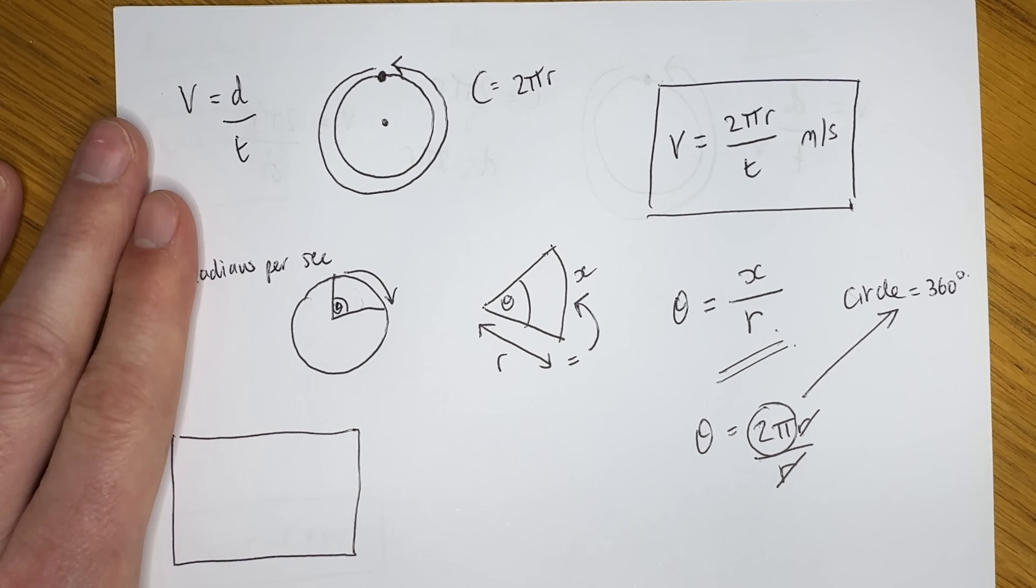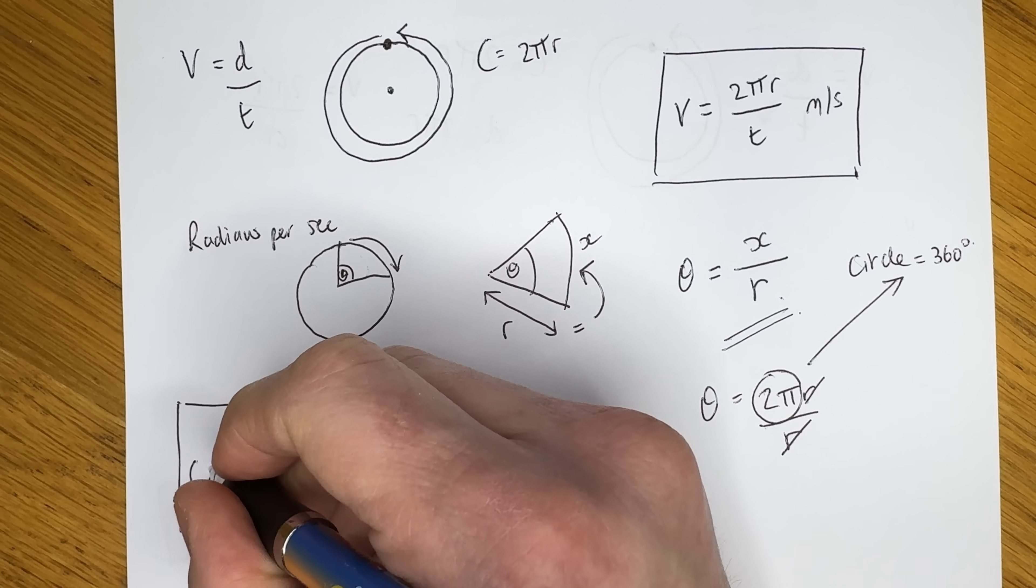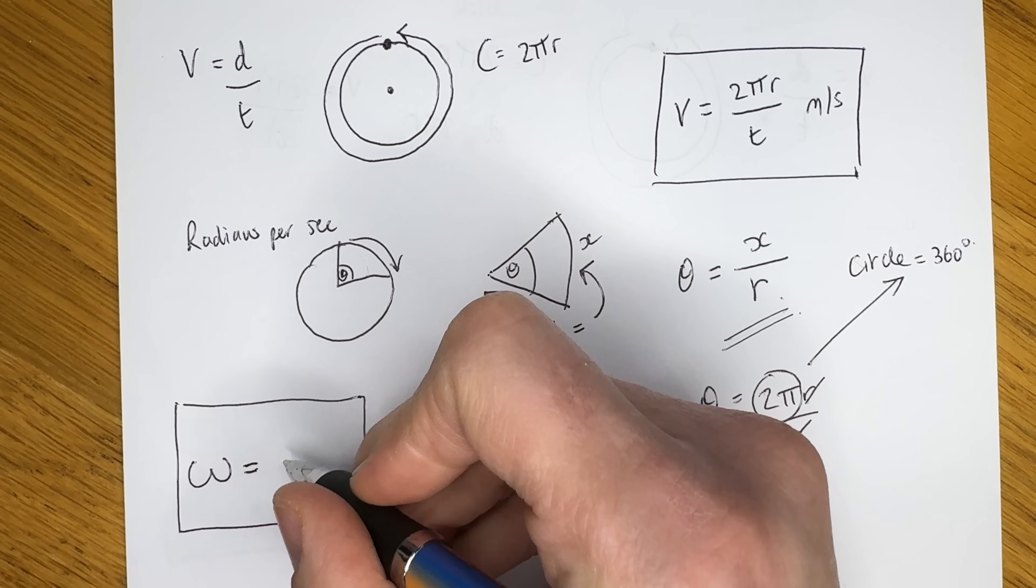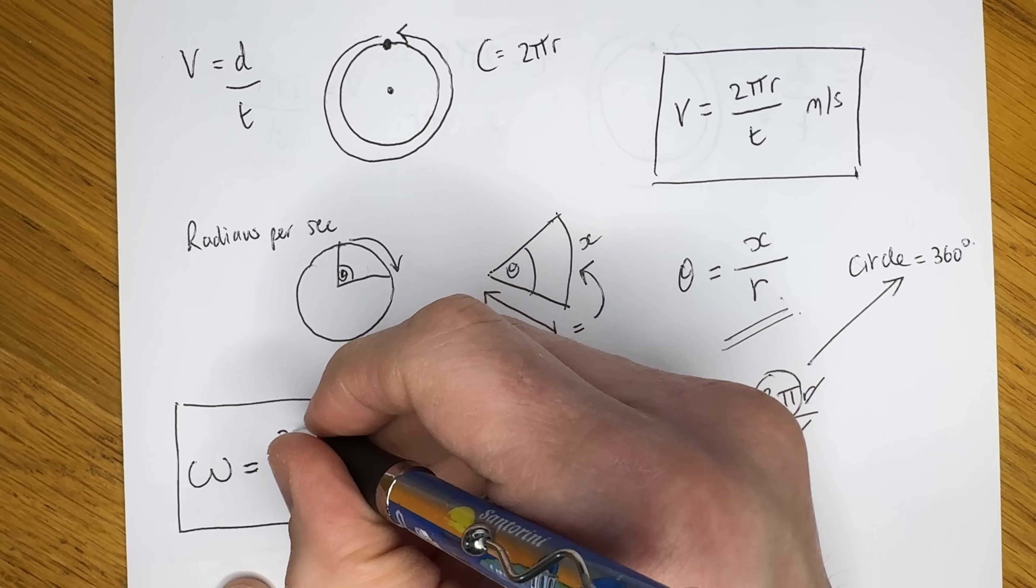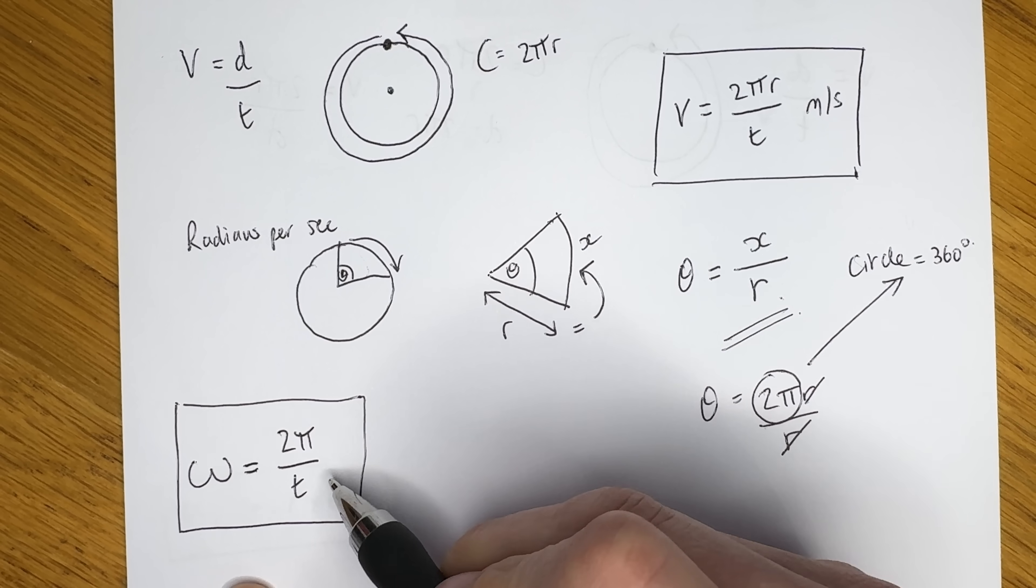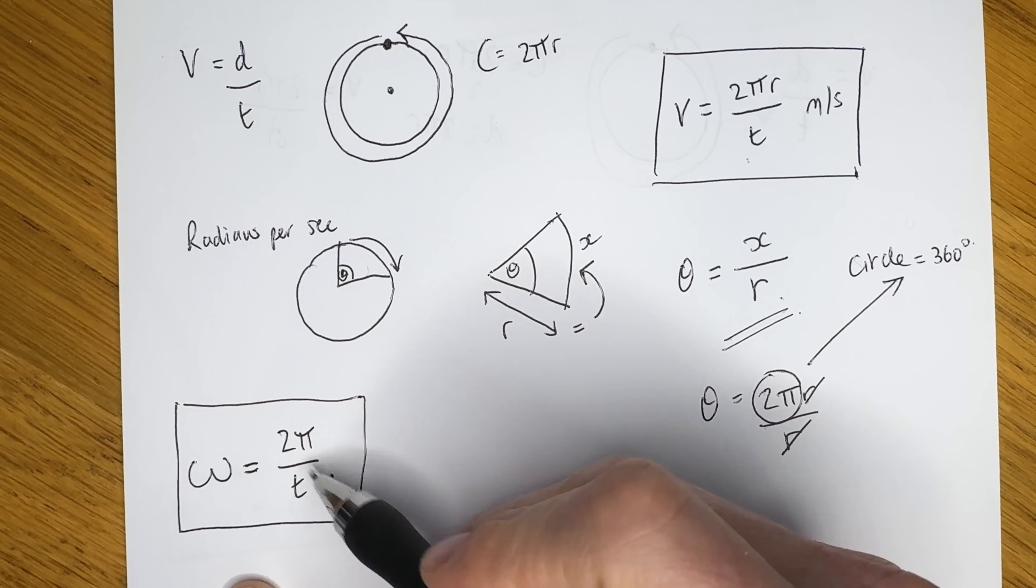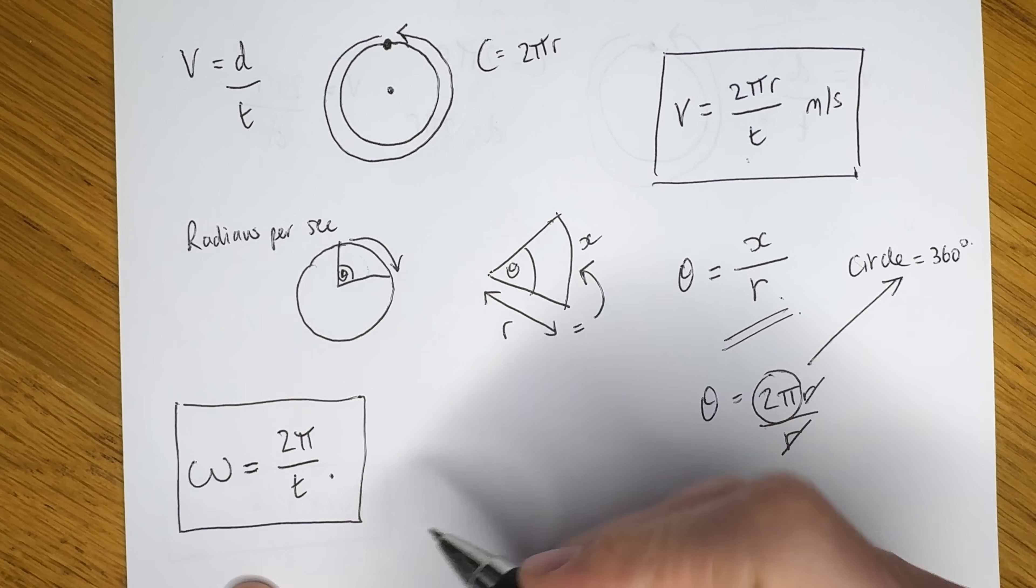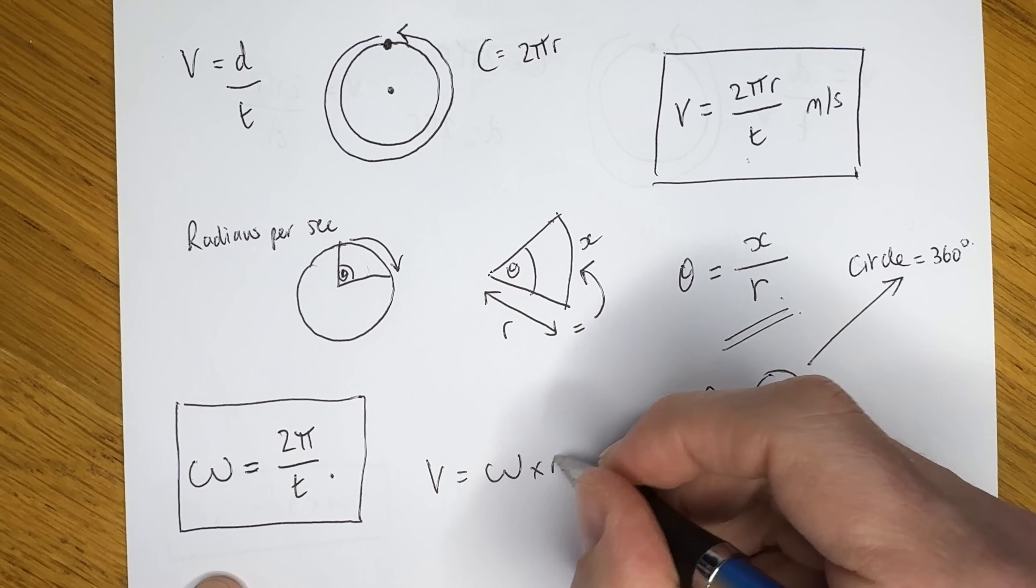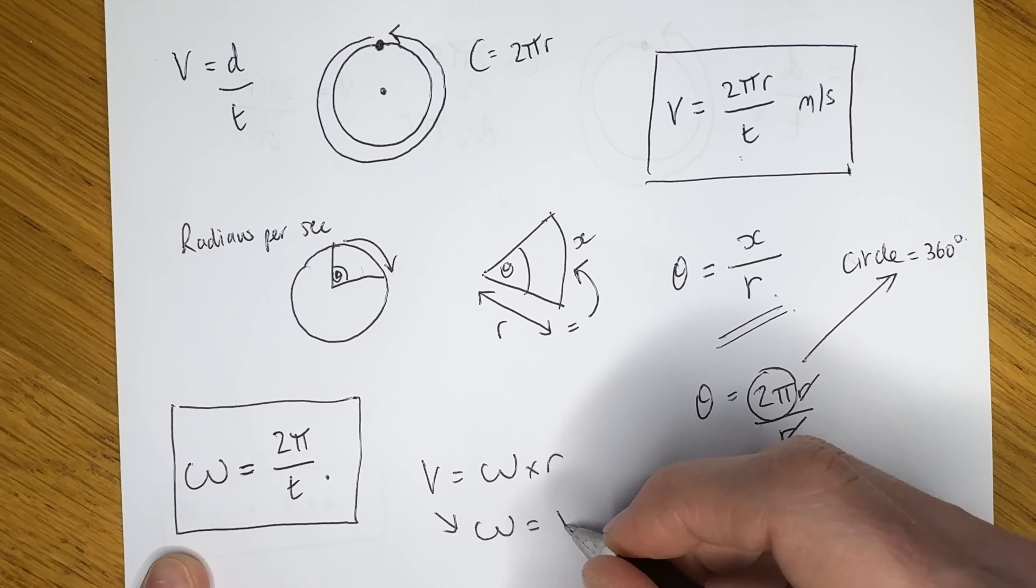And as I said, we need to measure the angular velocity of these objects in radians per second. So omega, which is our symbol for angular velocity, is the change in angle over time, which for a full circle would be 2π radians, and we divide that by the time taken t. But you might notice a relationship here between angular and linear velocity. Omega is 2π over t, and velocity is 2πr over t. That means we can say that v is omega multiplied by r. And if we arrange that, we can say that omega is the linear velocity divided by the radius, or r.